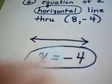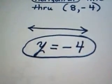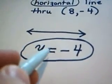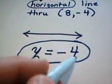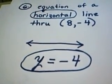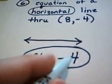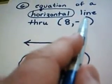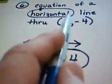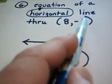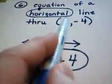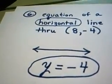So, your equation for this horizontal line would be y is equal to negative 4. Any horizontal line is going to be y equals a number, and this number can be determined by just knowing one ordered pair on the line and looking at the y value and totally ignoring the x value.